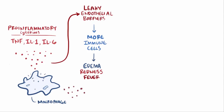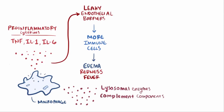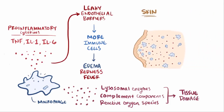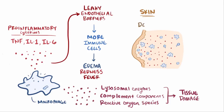Activated macrophages will also secrete lysosomal enzymes, complement components, and reactive oxygen species into the exposed area, which damage tissue. In the case of poison ivy, since this is all going on in the skin, it's called dermatitis — inflammation of the skin.